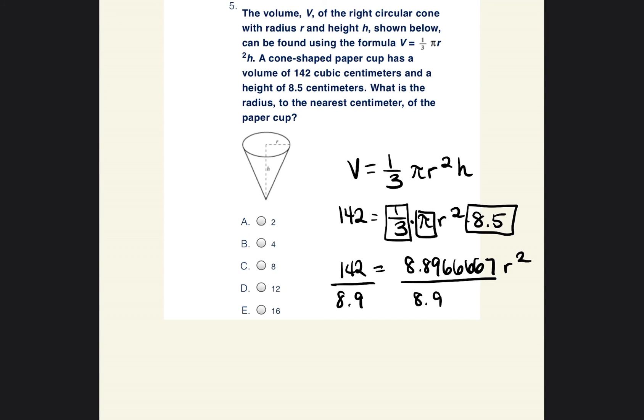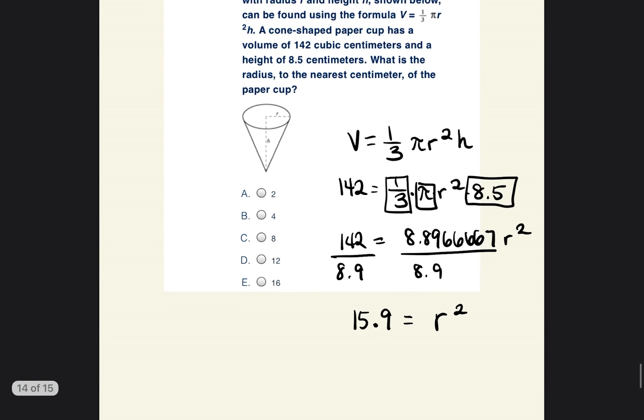So we're going to go ahead and divide. I'm just going to divide by 8.9 rounded. So I would do 142 divided by 8.9, and that is equal to 15.9 is equal to R squared. In order to get rid of the R squared, we can do the square root, and that cancels the both things out, so you're just left with R. But if you do the square root of one side, you have to do the square root of both sides.